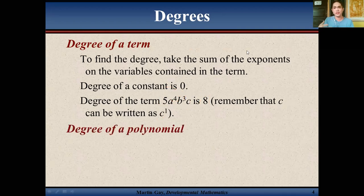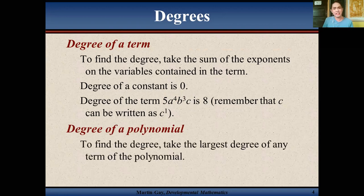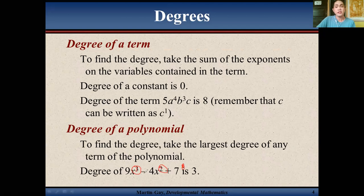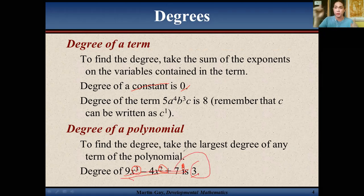For the degree of a polynomial, take the largest degree — the highest exponent — of any term in the polynomial. For example, the degree of 9x³ minus 4x² plus 7 is 3, because 3 is the highest exponent among all terms. The degree of a constant term is 0, so 3 remains the highest. That's why the degree of this polynomial expression is 3.